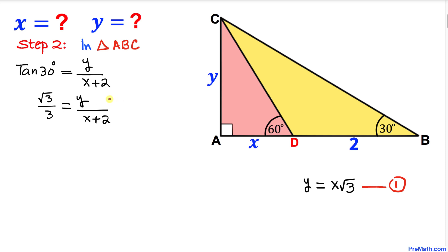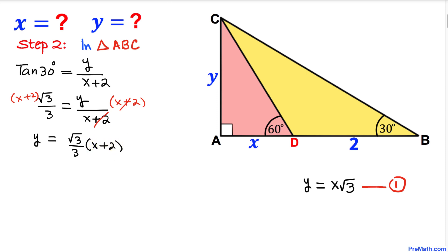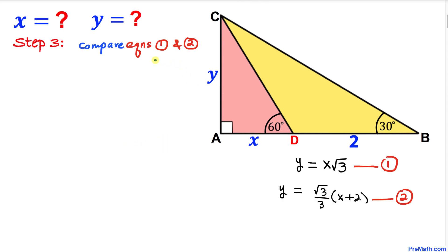Replacing tangent of 30 degrees, we have square root of 3 divided by 3 equal to Y divided by X plus 2. Multiplying both sides by X plus 2, we get Y equal to square root of 3 divided by 3 times X plus 2. Let's call this equation number 2.